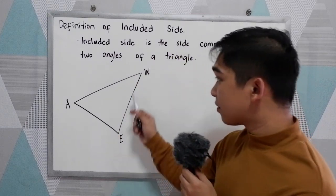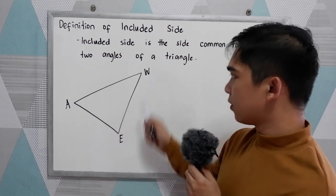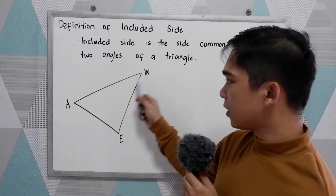To further understand, let's have this triangle. We have the triangle WAE.